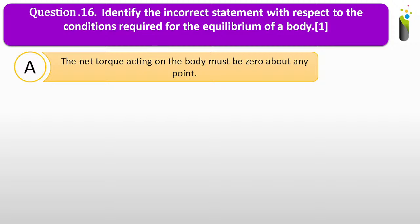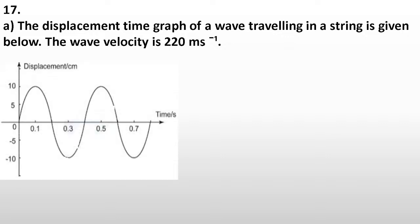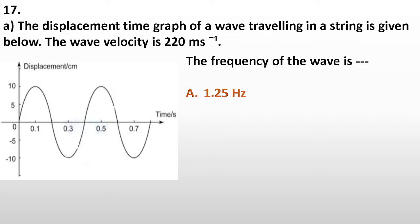Question number seventeen. The displacement-time graph of a wave traveling in a string is given below. The wave velocity is 220 m/s. The frequency of the wave is dash. Options: A, 1.25 Hz; B, 5 Hz; C, 2.5 Hz; D, 0.1 Hz. The correct answer is C, 2.5 Hz.